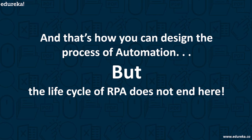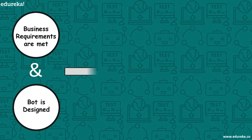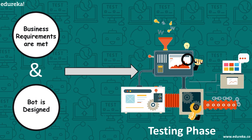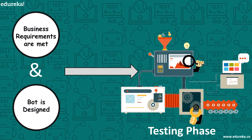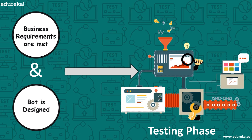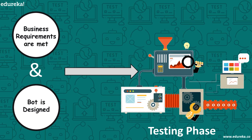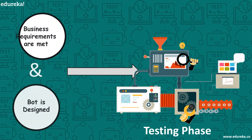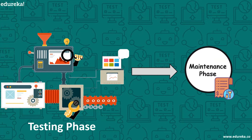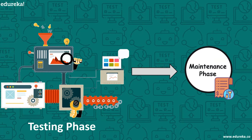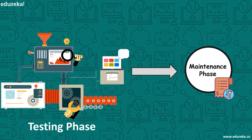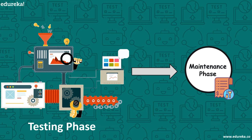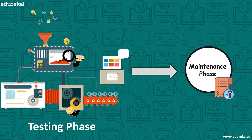The lifecycle of RPA does not end there. Once business requirements are analyzed and a bot is developed to automate a specific task, the next step is running testing cycles to analyze quality and correct defects in the automation workflow. After the development and testing phases, the bot enters the maintenance phase, providing continuous support and helping in immediate defect resolution. This is how RPA works and how a single or complex process can be automated.